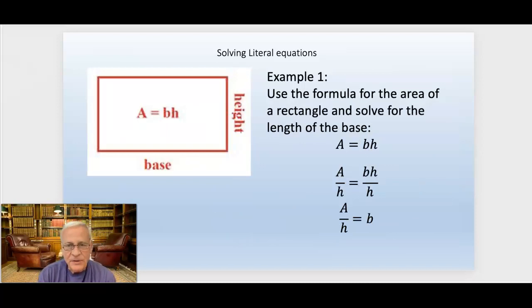As an example, here's the formula for the area of a rectangle: A equals bh, Area equals base times height. But we might want to solve for the length of the base. We might be given the area, we might be given the height, and we want to know what the base is. So you just divide both sides by h to get the b by itself. We're solving for b, get the b by itself. So you have to get rid of the h. You do that by dividing both sides by h. So you end up with A over h. That's what b equals. And it's okay to write the b on the other side. If these are flipped around, it means the same thing.